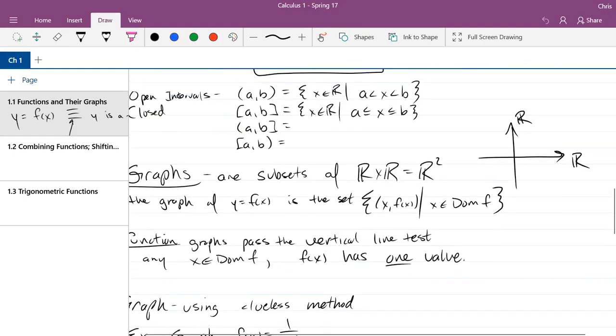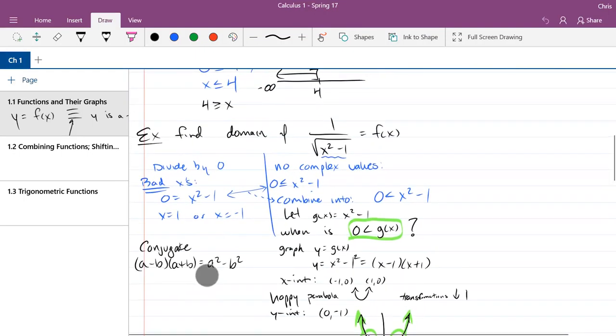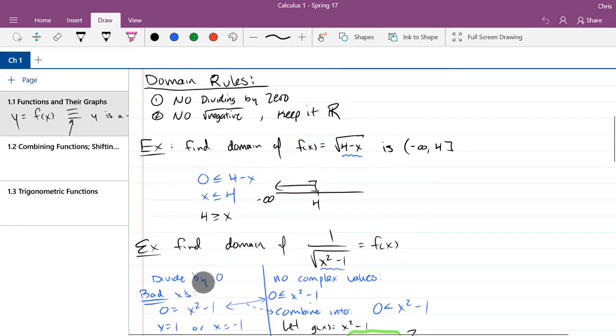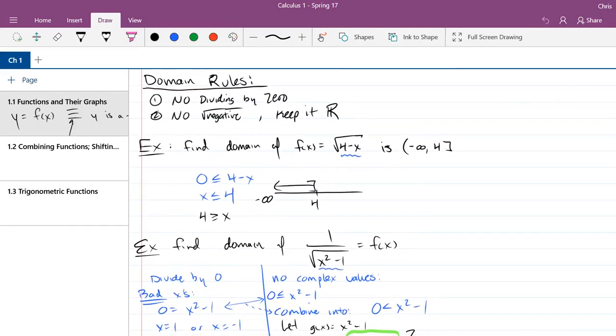I think we did 4 minus square root 4 minus x domain, something like that. Yep, we did the domain of square root 4 minus x. So we'll use that domain and graph it.